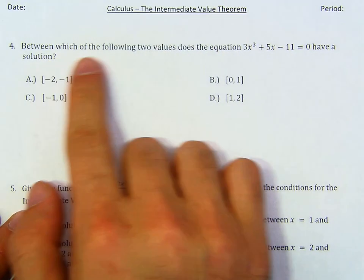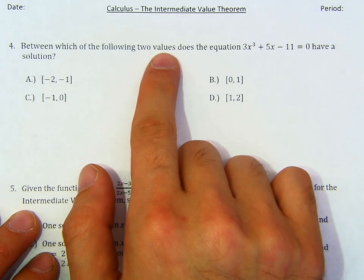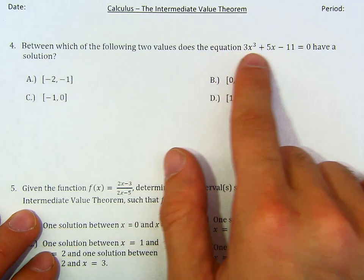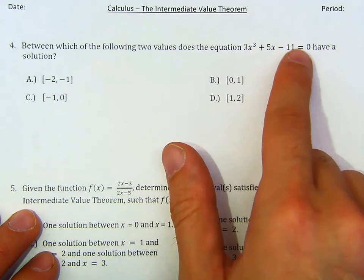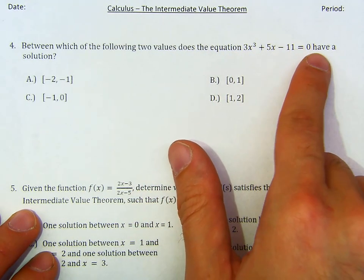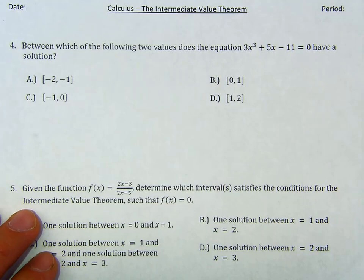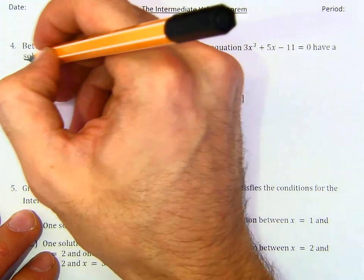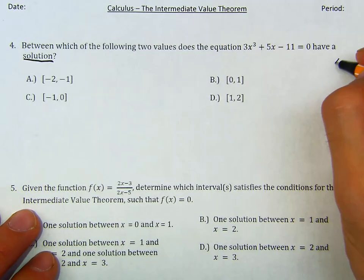Question four. Between which of the two values does the equation 3x cubed plus 5x minus 11 equals 0 have a solution? The key word here is 'have a solution.' So, what does it mean to have a solution?